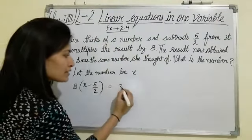We have to solve this equation, then we will get our answer. 8 multiplied by x is 8x. Now 8 multiplied by minus 5 upon 2, 8 times 5 is 40, so minus 40 upon 2 equals to 3x.